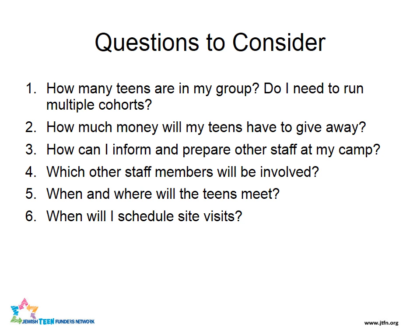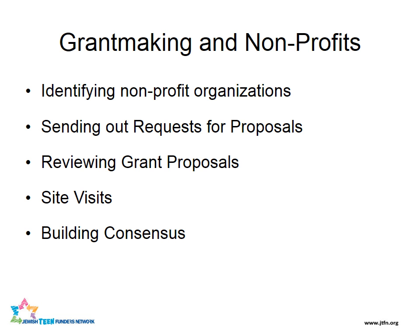Shai confirmed that last summer Yavna had two cohorts and they're likely doing it again this summer because they have more than 25 kids in the group. In our self-assessment, most of us feel more confident about the Jewish education and teen facilitation pieces than the grant making piece. So on top of being able to access our team, we're going to cover grant making in detail. When we talk about philanthropy in this program, we mean the giving of grants and money, not fundraising. Grant making covers identifying nonprofit organizations, sending out requests for proposals, reviewing grant proposals, going on site visits, and building consensus to make a grant-making decision.